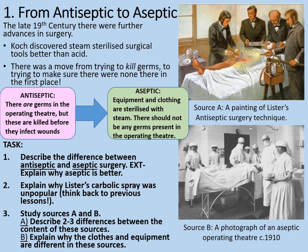Sources A and B — there are lots of differences between them. You could comment on the differences in clothing of the surgical staff: pretty much regular everyday clothes for the period are worn in Source A, whereas specialist surgical smocks are worn in Source B. Also, we cannot see any evidence of the carbolic spray in Source B because it's not being used at that point. Some of the staff in Source B are women, highlighting the increasing role of women in hospitals.